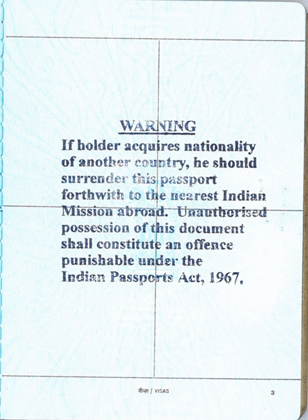Between 15 August 1947 and the date when an Indian princely ruler merged his state into the new dominion of India, thereby transferring his sovereign powers to the Indian government, the subjects of his state remained stateless — lacking any recognised nationality or British subject status. From 1 January 1949, when the British Nationality Act 1948 came into force, to 25 January 1950, Indians in the Indian provinces became British subjects with Indian citizenship. From 26 November 1949, Indians domiciled in the territories of India became Indian citizens.